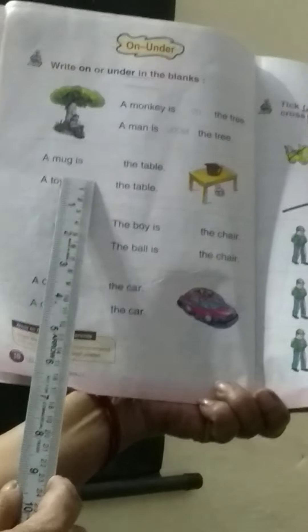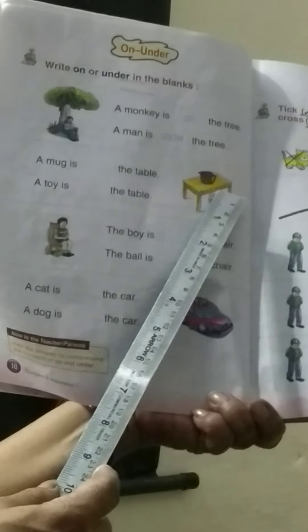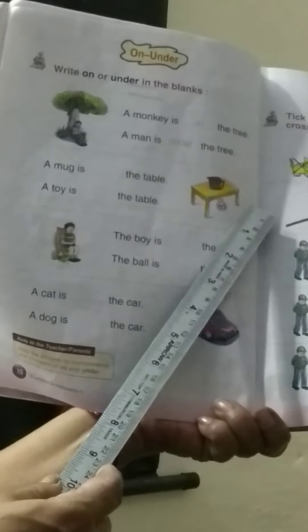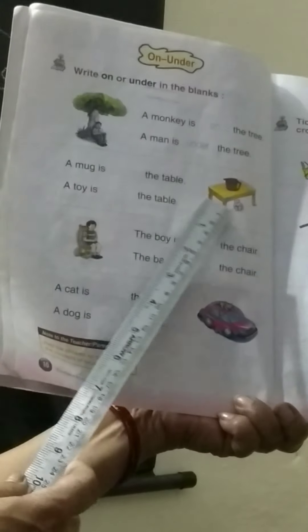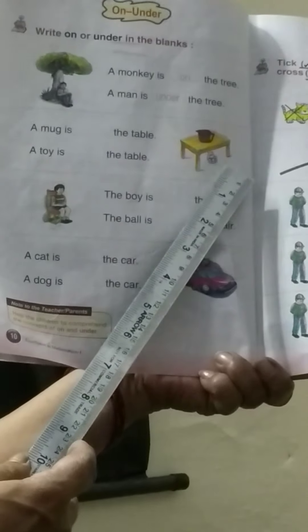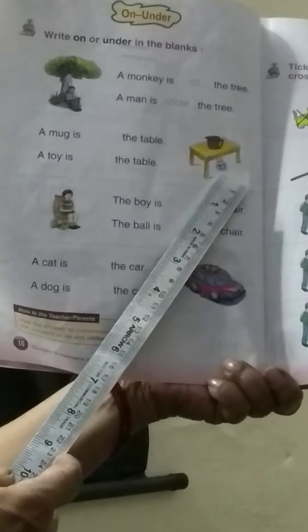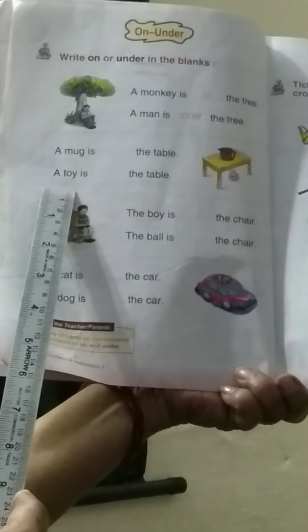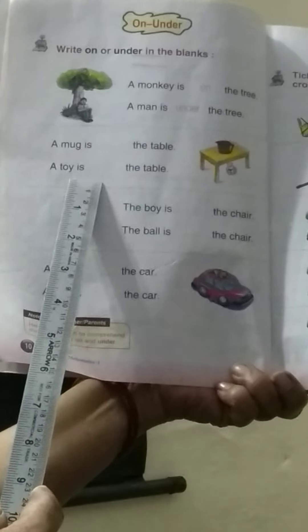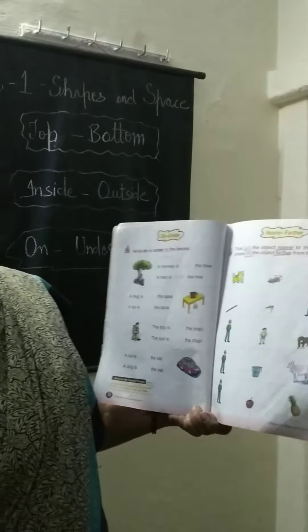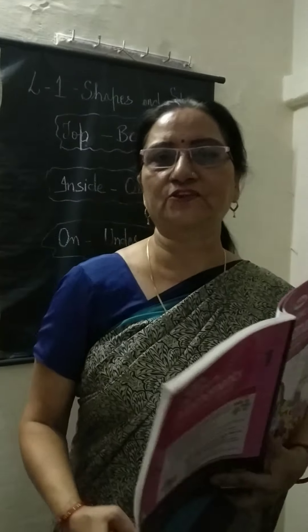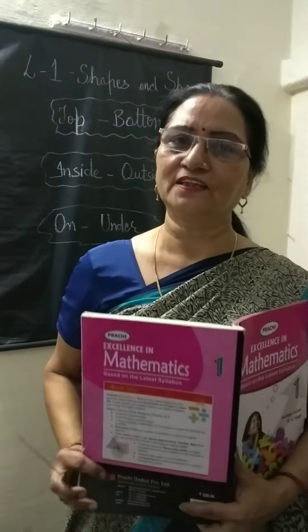Now in the next, a mug is dashed the table. Where is the mug? The mug is table ke upar hai — so you write: on the table. And the toy — wo peed ke neechhe hai, so you fill: a toy is under the table. So similarly you fill these blanks. Okay, this is all for today. Have a nice day.